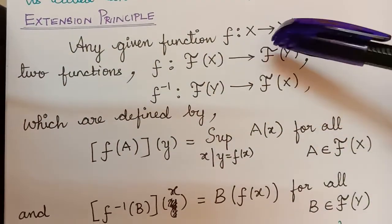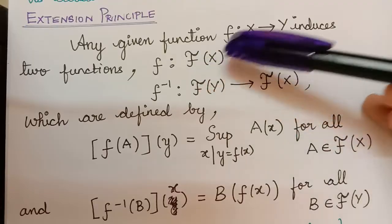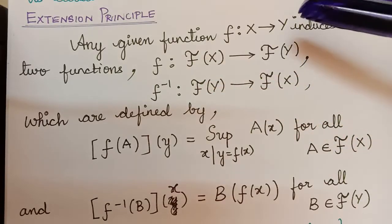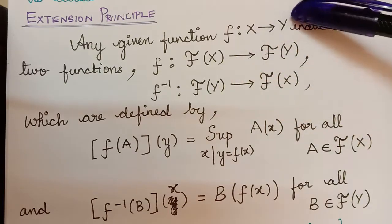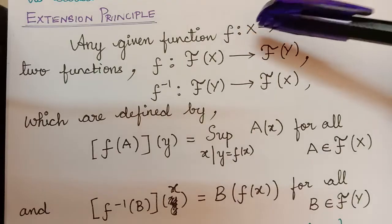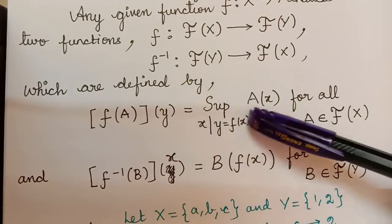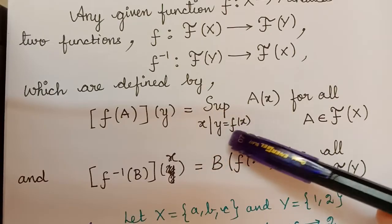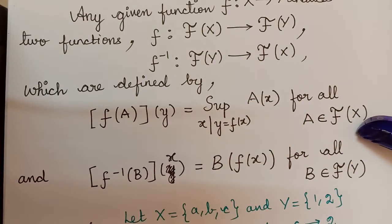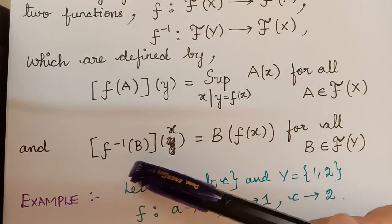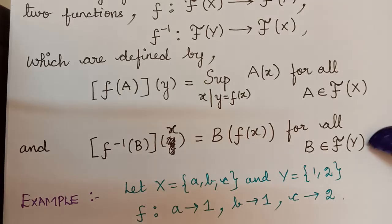Any given function f from X to Y induces two functions: one function from the set of all fuzzy sets with respect to universal set X to the set of all fuzzy sets with respect to universal set Y, defined by f(A)(y) = supremum of A(x) where x such that y = f(x), for all A in the fuzzy sets of X. The inverse function is defined by f-inverse(B)(x) = B(f(x)) for all B in the fuzzy sets of Y.